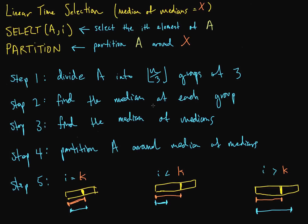The second step was to find the median of each of those groups. We did that by sorting each group independently and just taking the middle element — the median. That took us O(n) time if we use insertion sort. Step 1 was also O(n), because we went through the array and divided it up into groups of 3.